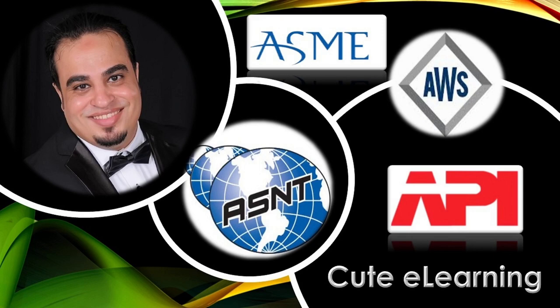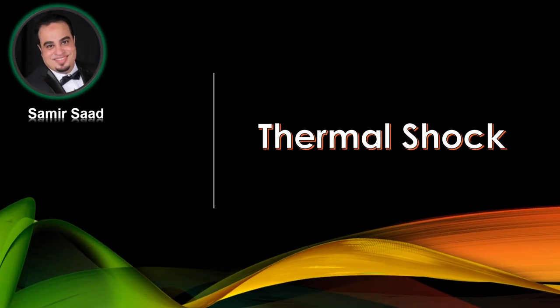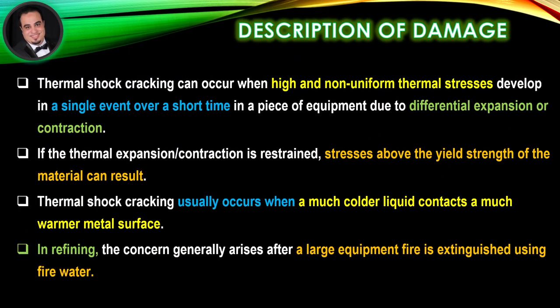Welcome to the Qt eLearning channel. In this lecture we will discuss thermal shock. Thermal shock cracking can occur when high and non-uniform thermal stresses develop in a single event over a short time in a piece of equipment due to differential expansion or contraction. If the thermal expansion or contraction is restrained, stresses above the yield strength of the material can result. Thermal shock cracking usually occurs when a much colder liquid contacts a much warmer metal surface. In refining, the concern generally arises after a large equipment fire is extinguished using fire water.